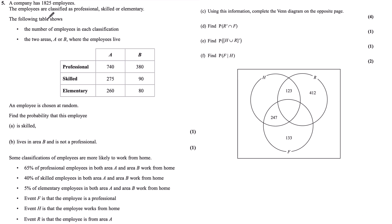Question 5. A company has 1,825 employees. The employees are classified as professional, skilled, or elementary. The following table shows the number of employees in each classification, in the two areas, A or B, where the employees live.